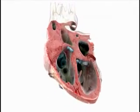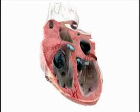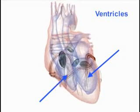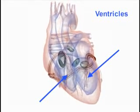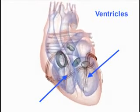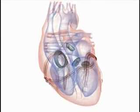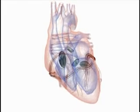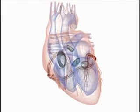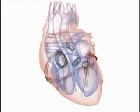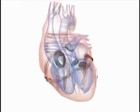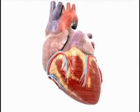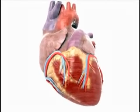Congestive heart failure, on the other hand, occurs when the heart is pumping inefficiently and can no longer meet the body's need for blood. The ventricles, which are the main pumps within the heart, are often to blame for the insufficient blood flow. The congestive part of congestive heart failure comes from the backup of blood in the veins leading into the heart, which causes the kidneys to retain fluids.